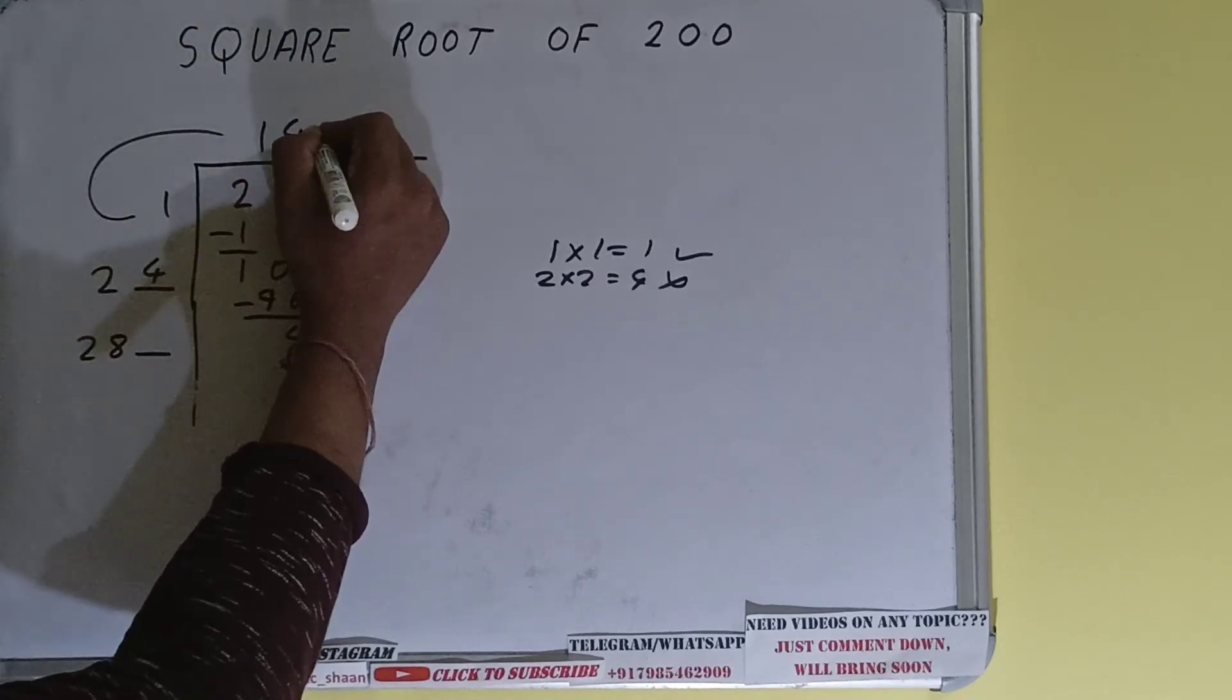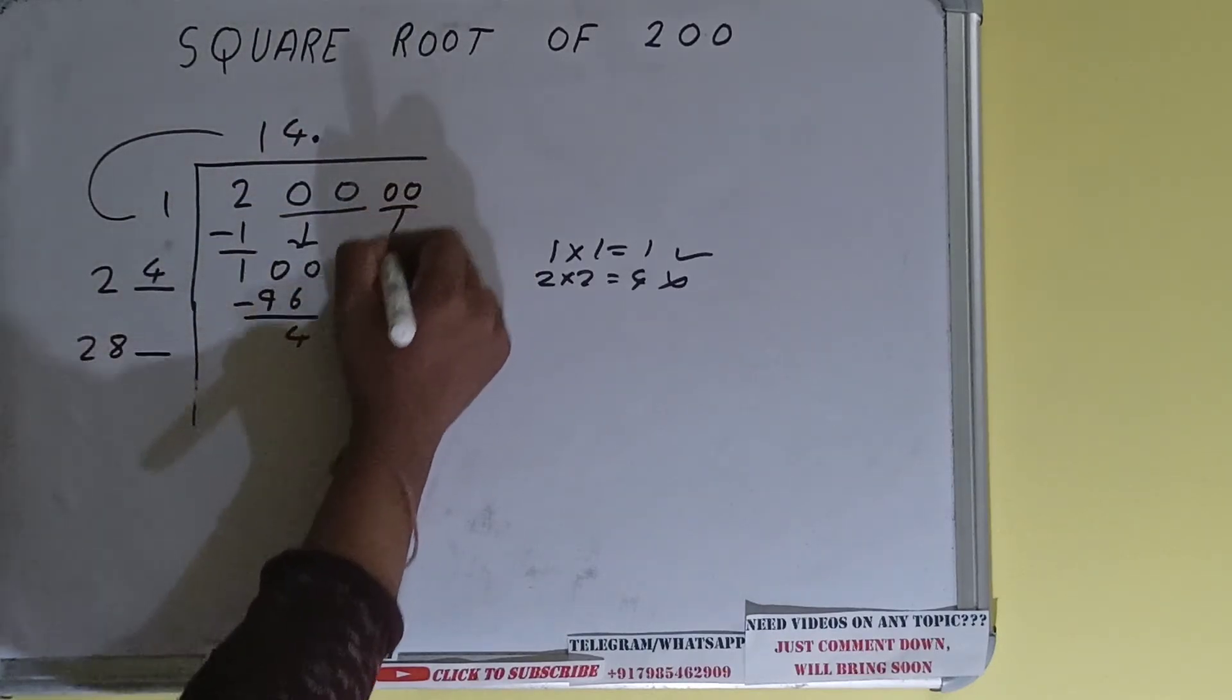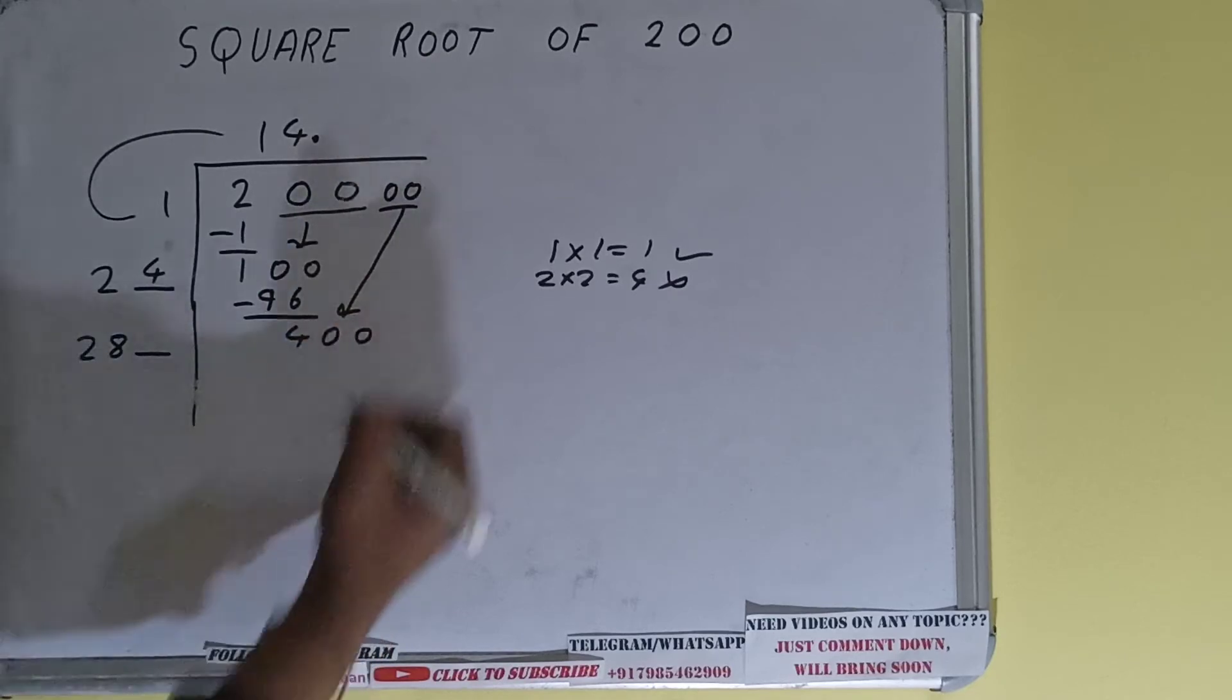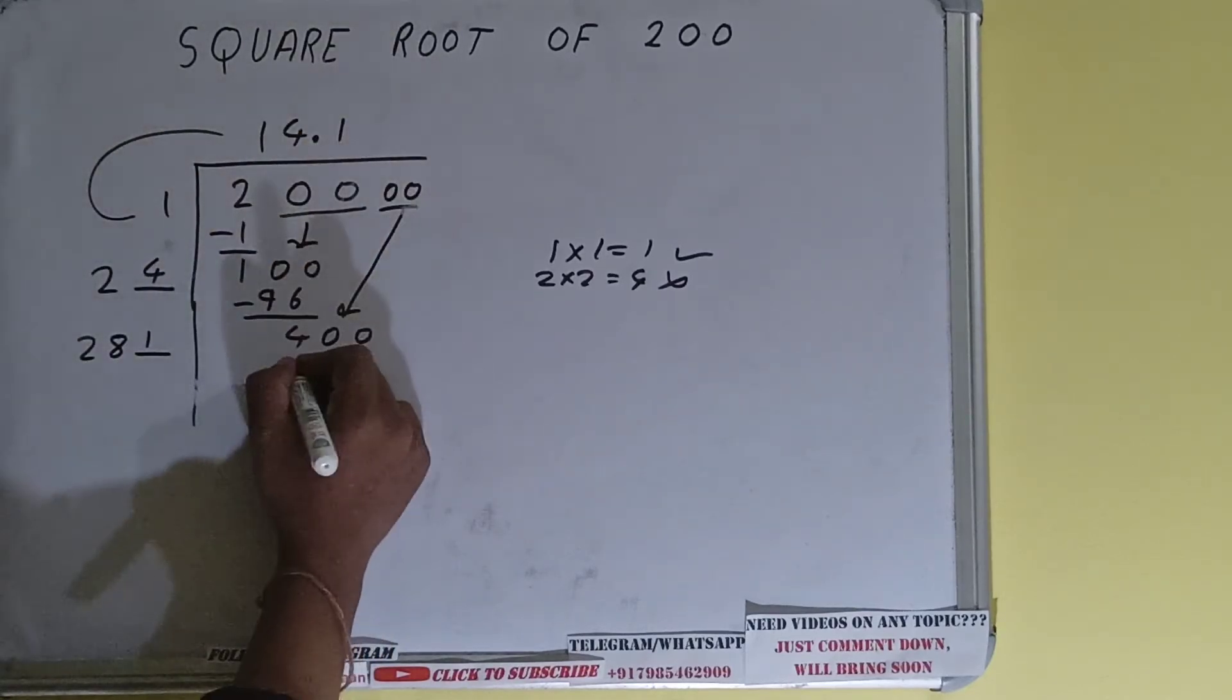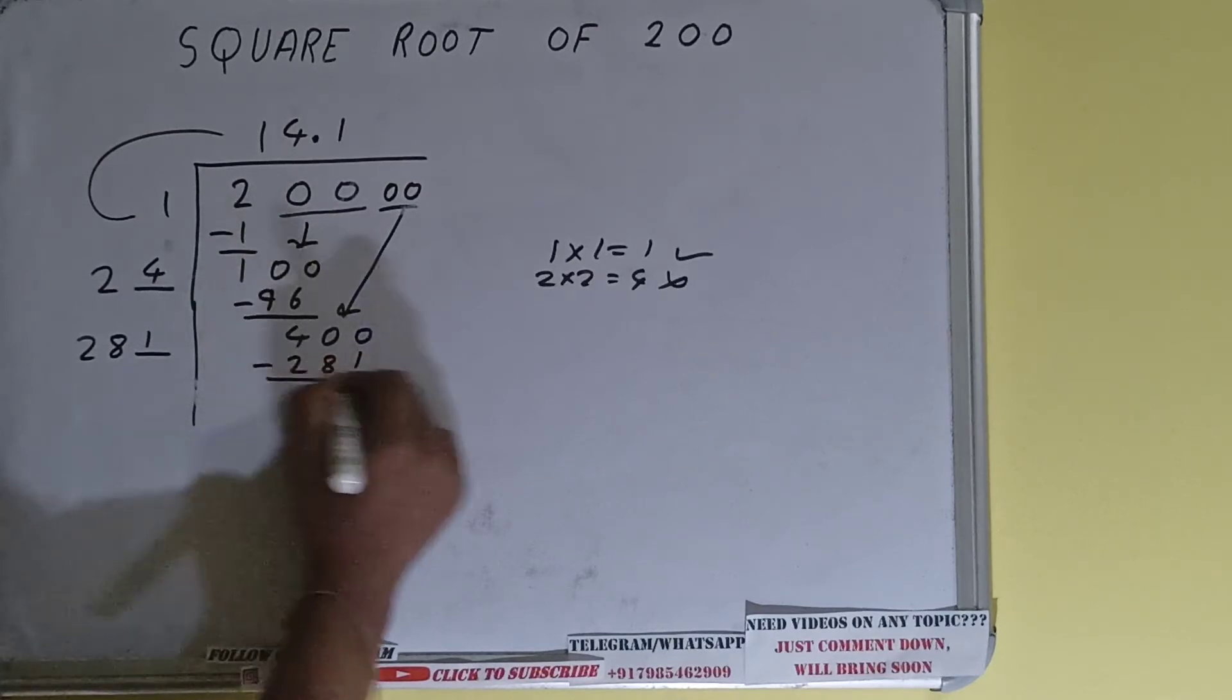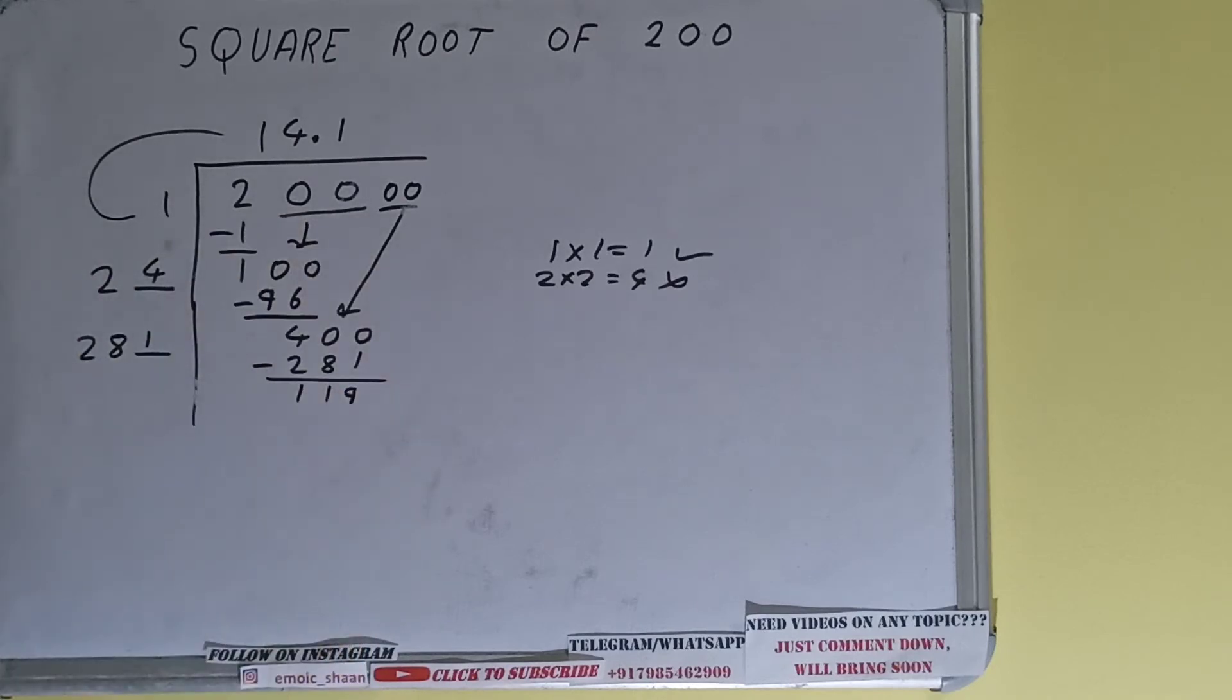So what we'll do is put a decimal. Once we put decimal we can bring pairs of zeros down and the number will become 400. Now one time will work. One here and one here will give 281. Subtract it and we'll be having 119.